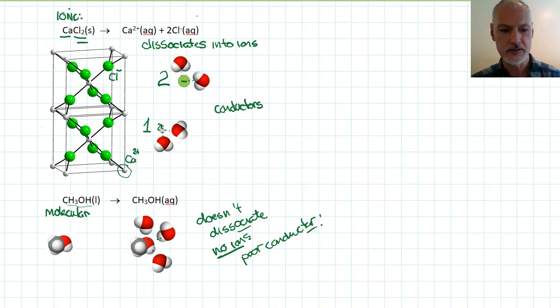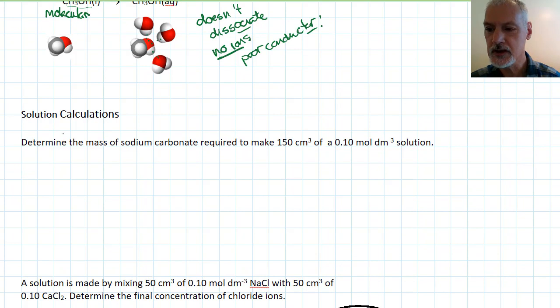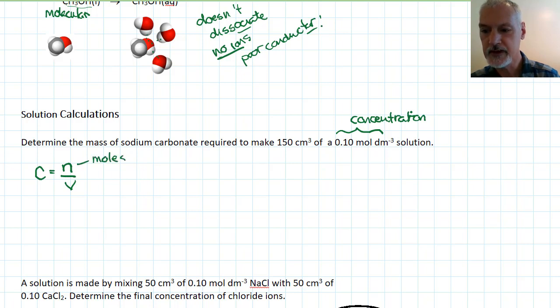Let's look at a little bit of calculations from solutions. In my first question, I want to determine the mass of sodium carbonate required to make this solution. We refer to this as the concentration of my solution. The concentration of a solution is given by the number of moles divided by the volume. This would be how many moles we have present. This typically is the volume measured in decimeters cubed or liters.